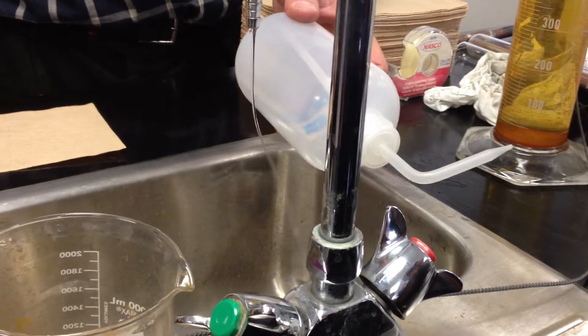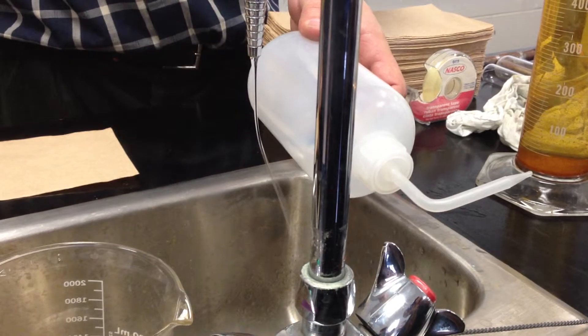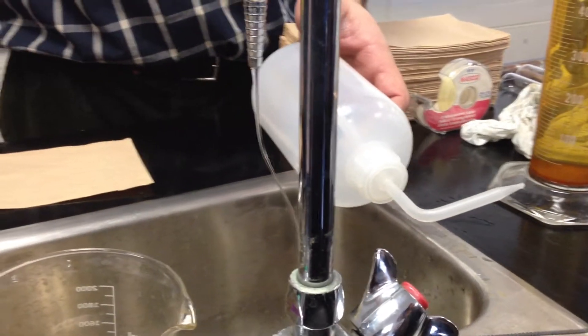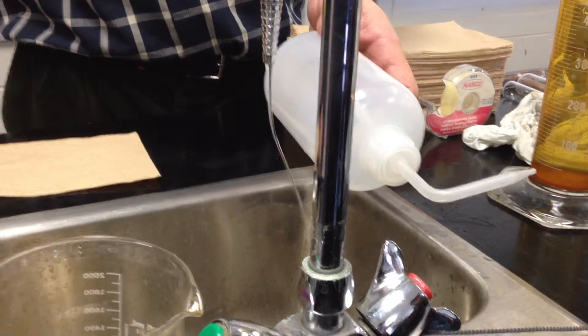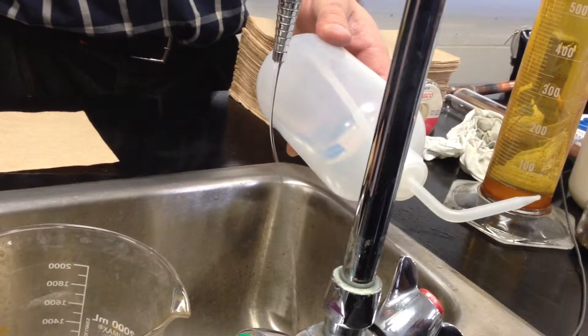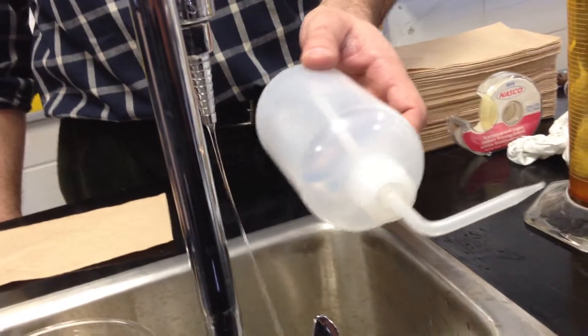And you see here that the stream of water is being bent by the static charge on the bottle, on the polypropylene bottle. The water molecules are definitely attracted to the static charge on that bottle. You can see from the bending of this water stream.